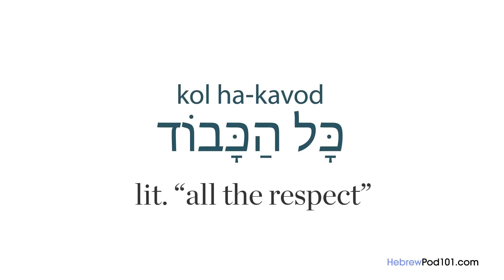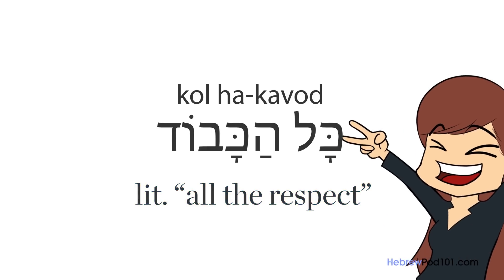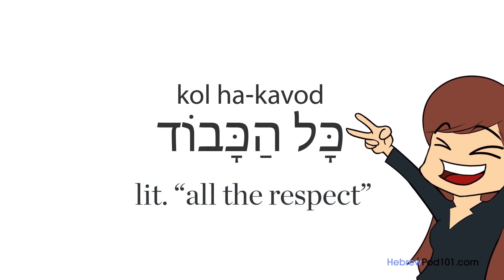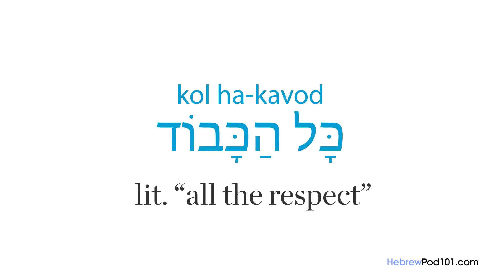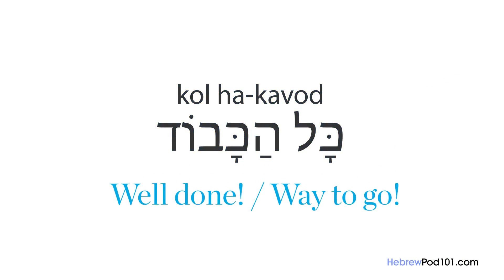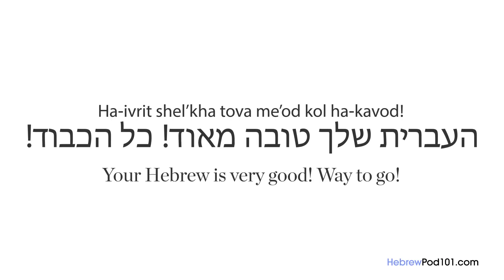The next expression is 'kol ha-kavod,' which literally means 'all the respect.' You can say it to show your appreciation for an achievement, big or small — it means something like 'well done' or 'way to go.' Unlike 'titchadesh,' this expression doesn't change according to the person you're speaking to. For example: 'ha-ivrit shelcha tova me'od, kol ha-kavod' — your Hebrew is very good, way to go.